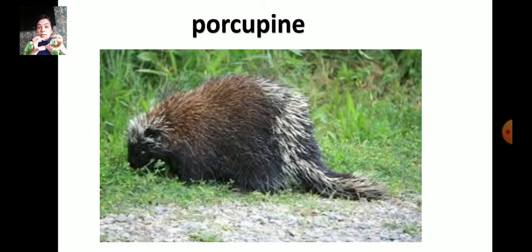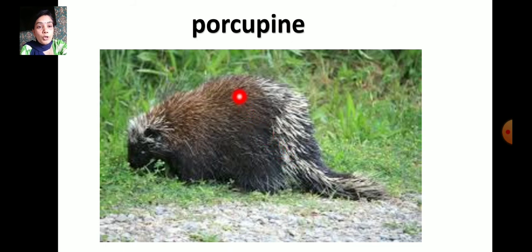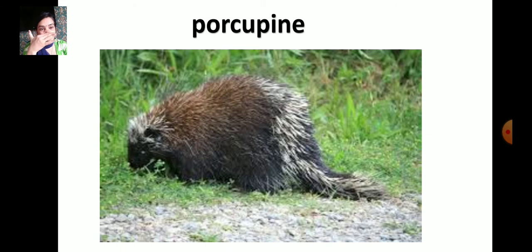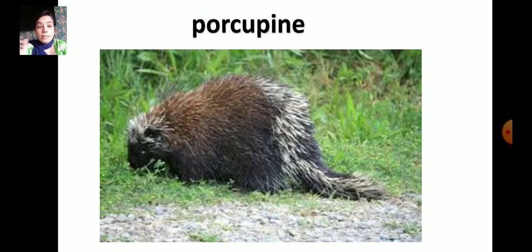Animals with spines and shells use them to protect themselves. The porcupine and hedgehog have spines on their bodies. When an enemy comes, their spines become very big — if you touch that animal, you will get hurt and blood oozes out.